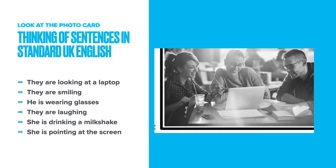If we think of sentences in standard English to describe the photocards we have to work with in French, we look at a picture and start saying things like: 'they are looking at a laptop', 'they are smiling', 'he is wearing glasses', 'they are laughing', 'she is drinking a milkshake', 'she is pointing at the screen'. All of these are perfectly good sentences in standard UK English. But if we use these as a starting point for our French, we're going to get into trouble trying to translate 'is', 'are', and the '-ing' bit, and we're going to end up with French that is incorrect. So we're going to apply a Norfolk Translation.